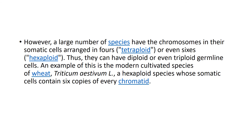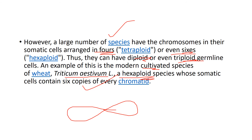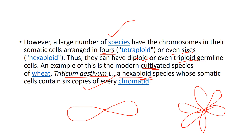However, a large number of species have chromosomes in somatic cells arranged in fours or even sixes, giving them diploid or even triploid germlines. For example, the modern cultivated wheat species Triticum aestivum is a hexaploid species — its somatic cells contain six copies of every chromosome. In humans the chromosome structure is diploid, but in some plants you have triploid species, and in Triticum aestivum you have hexaploid, with six chromosome sets. This forms the basis of ploidy breeding.